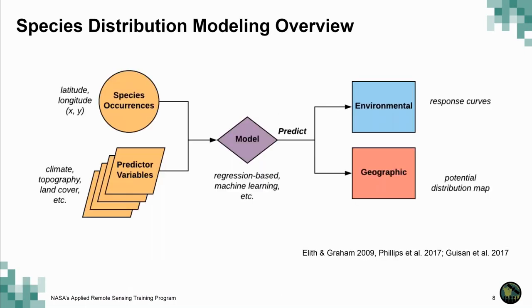Species distribution models typically take species occurrences and predictor variables that are important for the species' ecology — this could be climate, land cover, or topography. We put these variables into a model, which can be regression-based or machine learning. As we've mentioned throughout the sessions, there are many ways to build a species distribution model. Through this model we try to predict the geographic areas where the species could be and generate a potential distribution map.